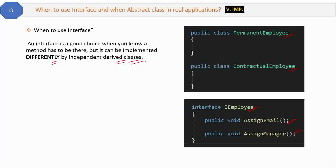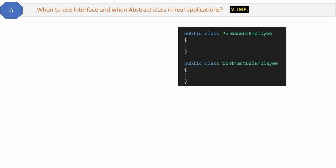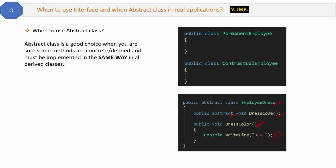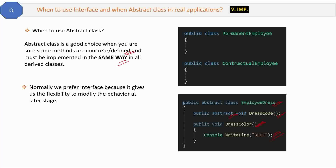An interface acts like a contract. Now, when to use abstract classes: for example, with PermanentEmployee and ContractualEmployee, we have an abstract base class EmployeeDress. The dress code is an abstract method because the implementation differs by gender. However, the dress color will always be blue regardless — so we know the implementation and define the method body there. An abstract class is a good choice when some methods are concrete and must be implemented the same way in all derived classes. Normally we prefer interfaces because they give more flexibility to modify behavior later.